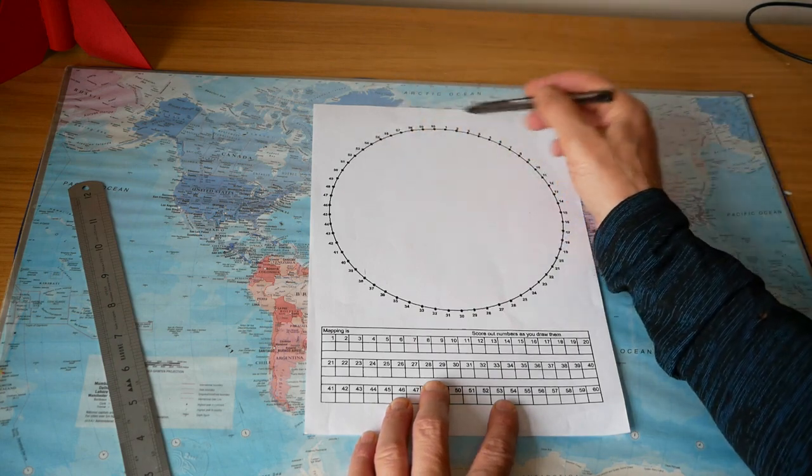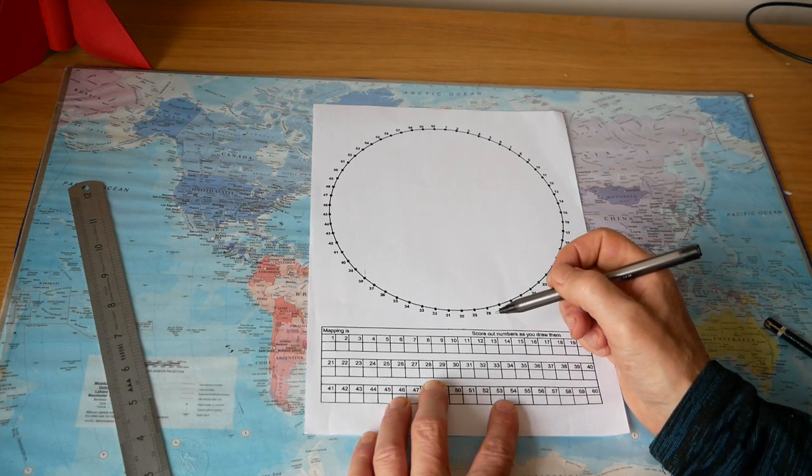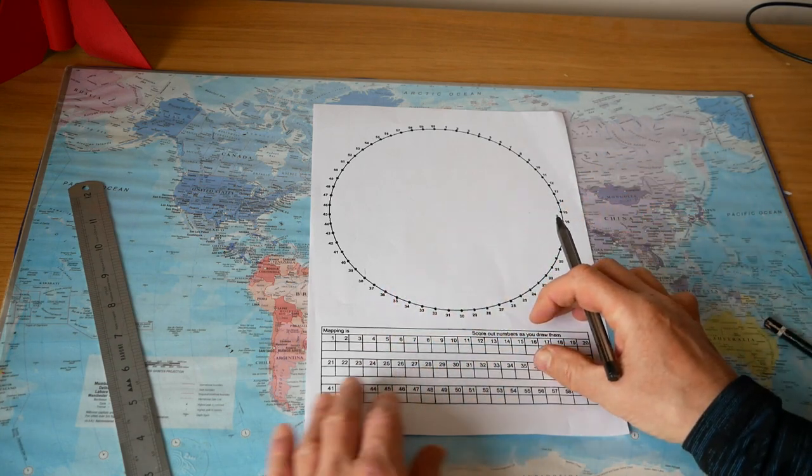I've just got a circle here and it's broken up into 60 equal bits, like a minute hand of a clock really. And then I've got a little table here.